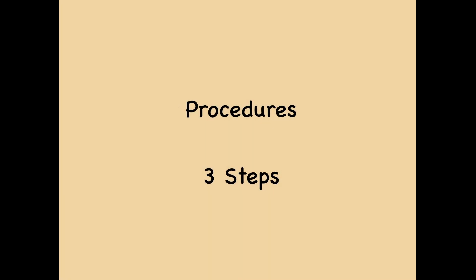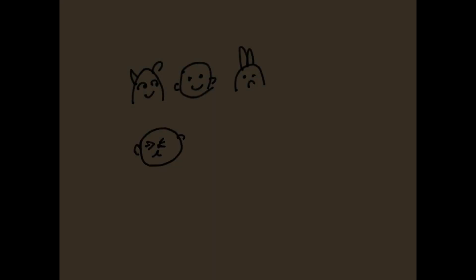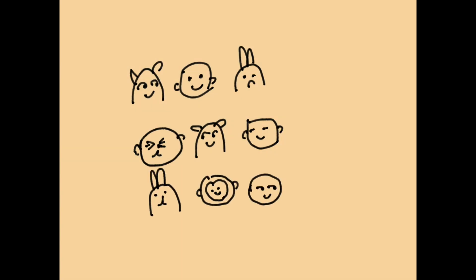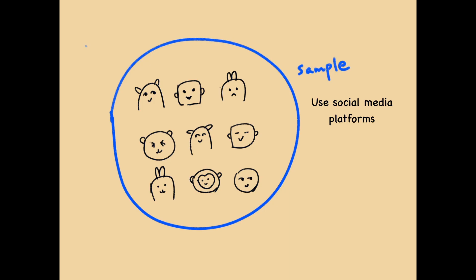Now let's take a look at the procedures of building algorithms to predict mental health status. There are three steps. Step 1: We select a sample of participants who use social media platforms.